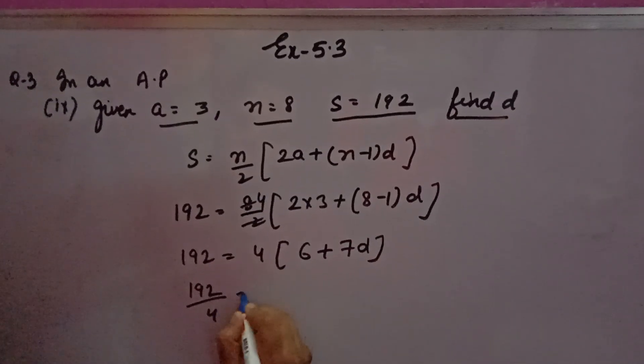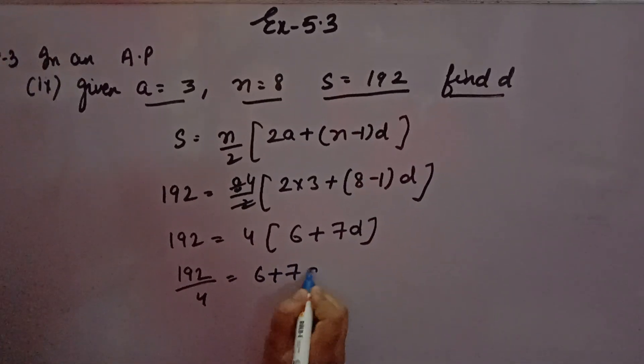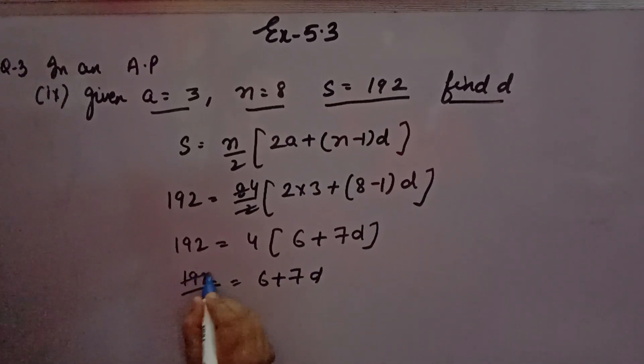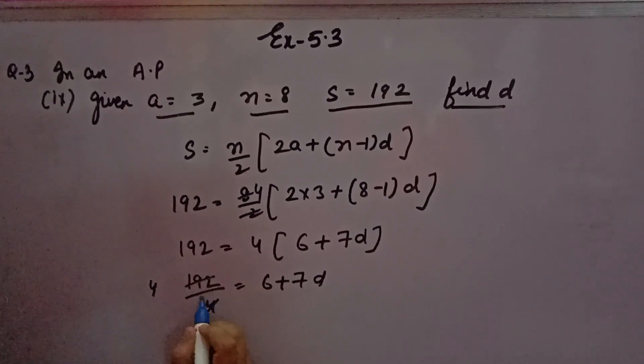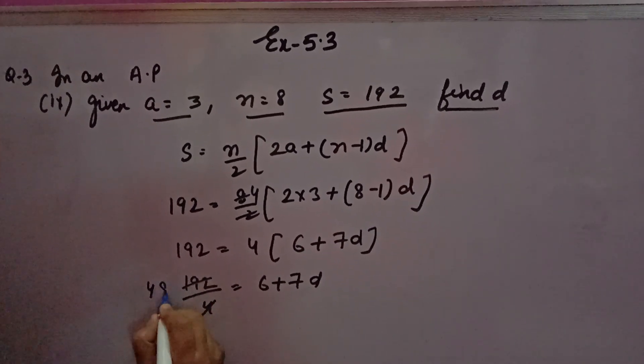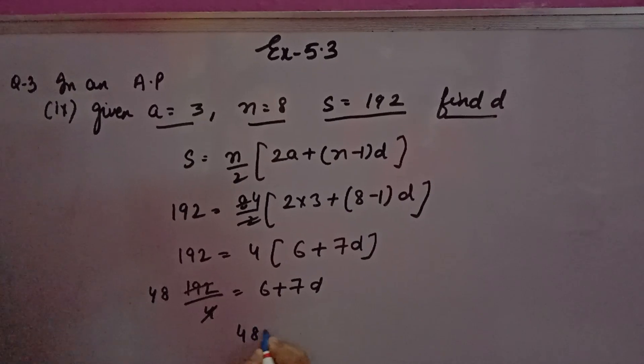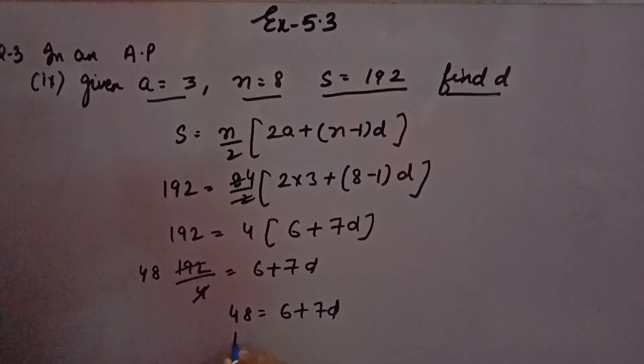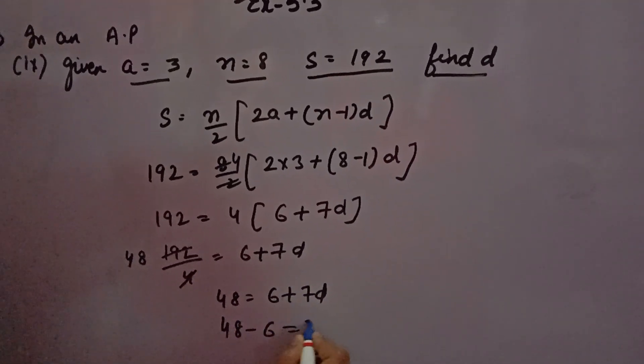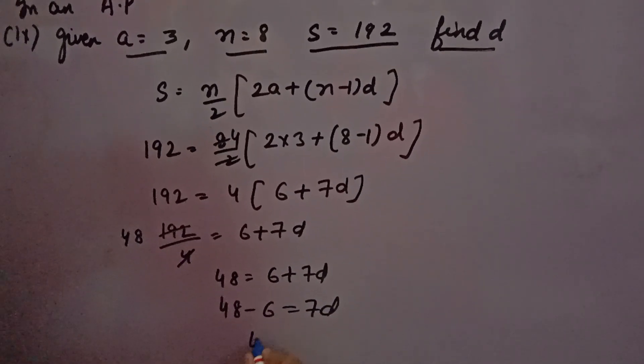192 over 4 is equal to 6 plus 7d. We will cancel it - 192 divided by 4 is 48. So 48 is equal to 6 plus 7d. 48 minus 6 is equal to 7d.